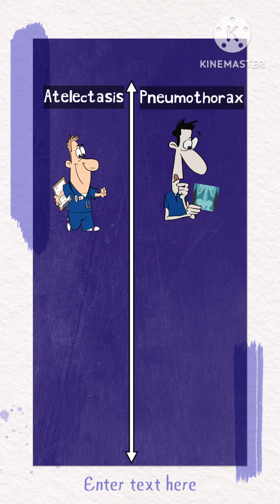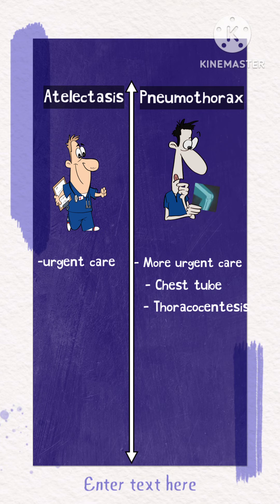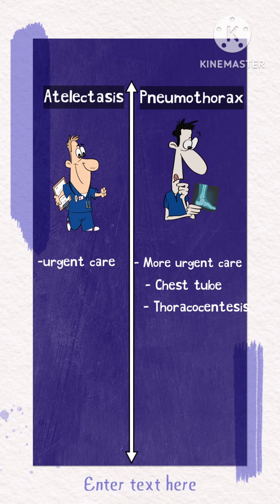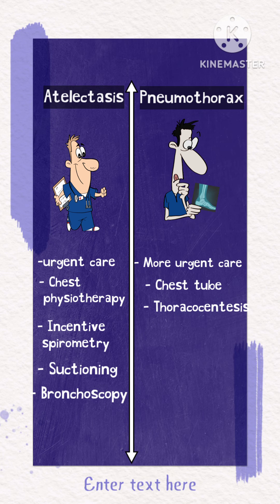Both disorders require immediate care, but pneumothorax typically needs a more emergent approach, with insertion of a chest tube or needle to decompress all the air from the pleural cavity. Atelectasis can be treated with techniques including chest physiotherapy, incentive spirometry, suctioning, bronchoscopy, or surgery.